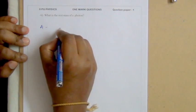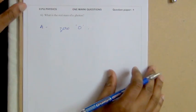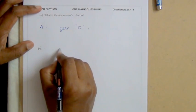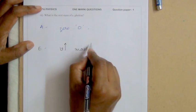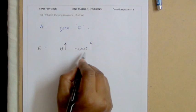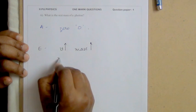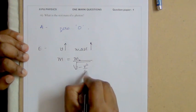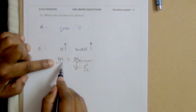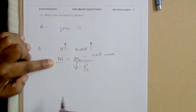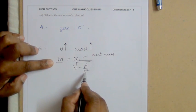What is the rest mass of a photon? Rest mass of a photon means when the photon is at rest. With the increase in speed, the mass of particles increases, whereas charge is unaffected by motion. The variation of mass with speed is given by m = m₀ / √(1 − v²/c²), where m₀ is the rest mass, v is the speed of the particle, and c is the speed of light in vacuum.